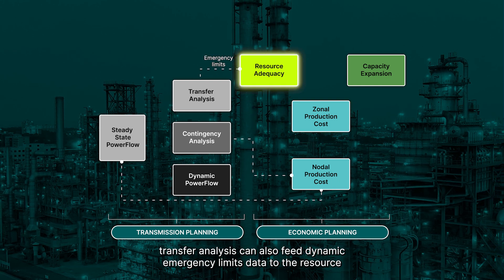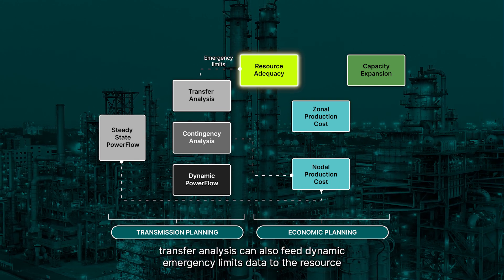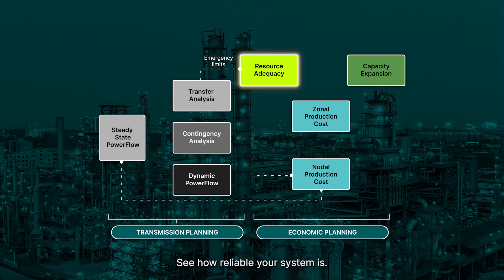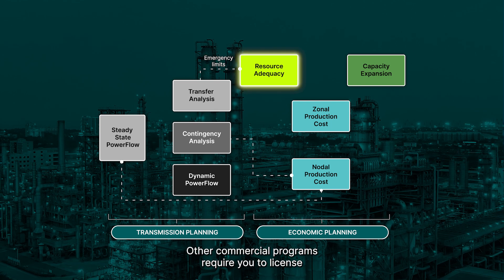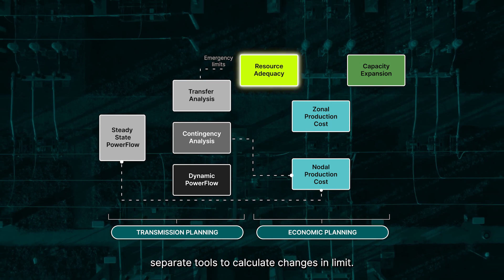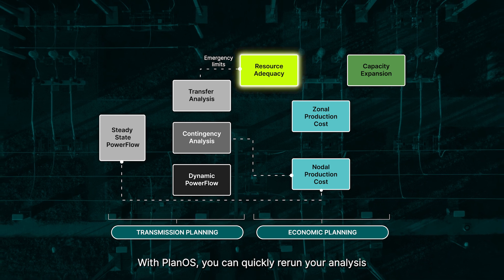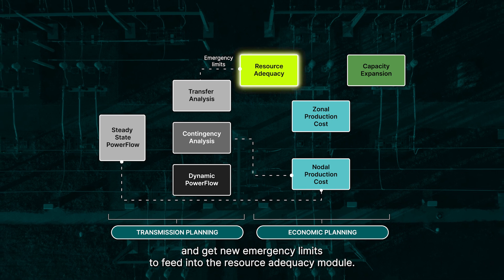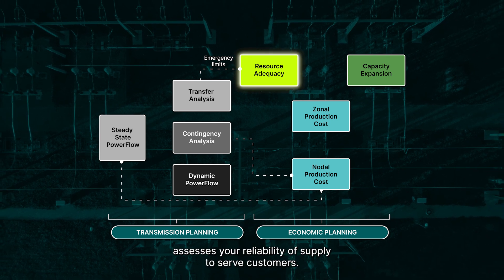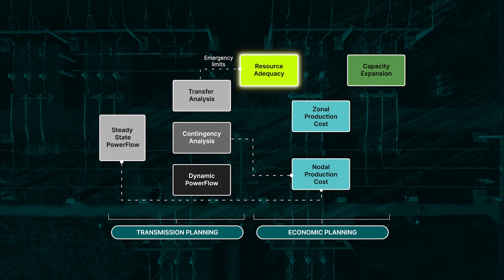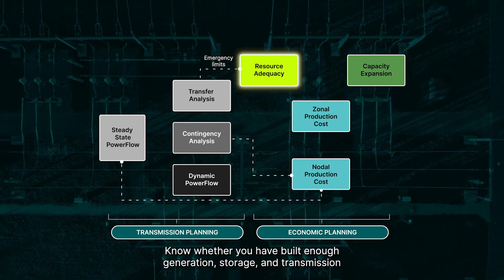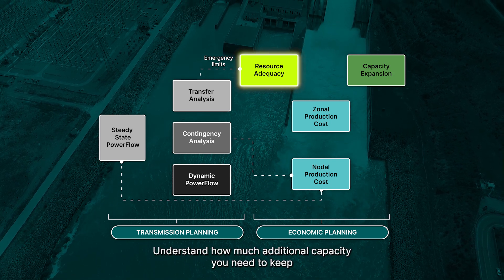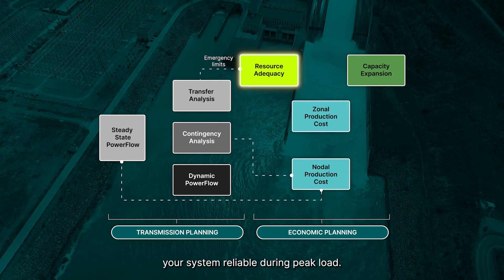Transfer Analysis can also feed dynamic emergency limits data to the Resource Adequacy module. Based on your units and how much you depend on your neighbors, see how reliable your system is. Other commercial programs require you to license separate tools to calculate changes in limit. With PlanOS, you can quickly rerun your analysis and get new emergency limits to feed into the Resource Adequacy module. Resource Adequacy assesses your reliability of supply to serve customers — know whether you have built enough generation, storage, and transmission to provide electricity reliably when it is demanded. Understand how much additional capacity you need to keep your system reliable during peak load.